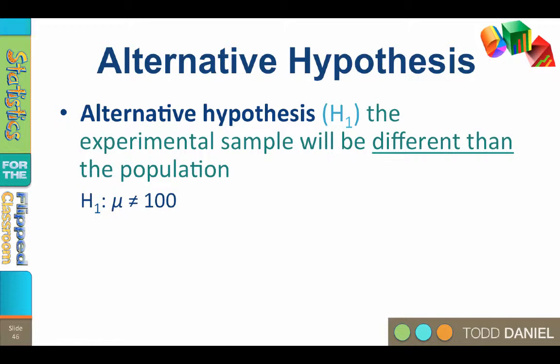So if the experimental mean was 150, then it is so unlikely to occur in a population with a mean of 100 that it better represents a population with a mean of 150. The alternative hypothesis will be written as h sub one: mu does not equal 100.